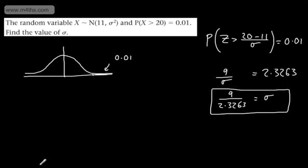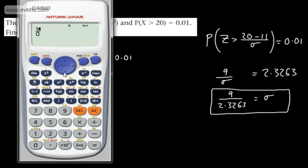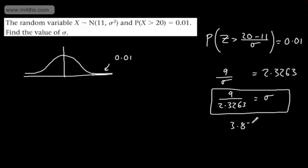So let's do that then. 9 over 2.3263. And we end up with 3.86 and so on and so forth. I'm going to round that to three significant figures. So we're going to say 3.87. So the value of σ, correct, three significant figures, is 3.87.